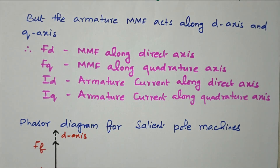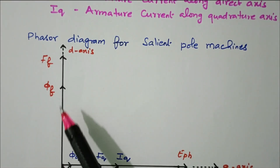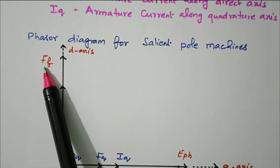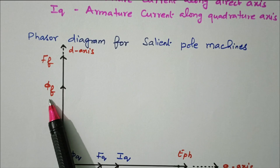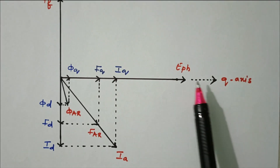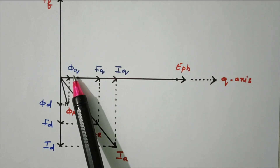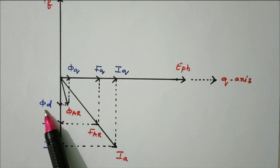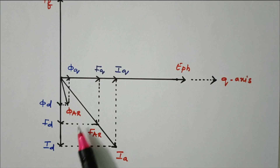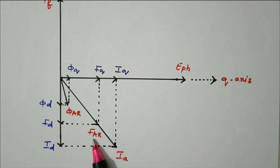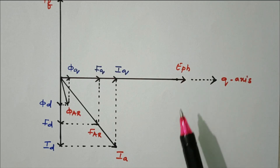Now we will see the phasor diagram of the salient pole machine. This is the D-axis. We have Ff and φf — that is the field MMF and the flux produced due to the field MMF. This is the quadrature axis, Q-axis. E-phase is the resultant phase voltage. φq and φd combine to give the resultant φar. φq is along the quadrature axis, φd is along the direct axis, and their vector sum is φar. Similarly, Fq is the MMF along the quadrature axis, Fd is the MMF along the direct axis, and their sum is Fa. The current components Iq and Id give vector sum Ia, from which the resultant E-phase is produced. This is the phasor diagram showing armature current, field current, flux, armature MMF, and armature flux.